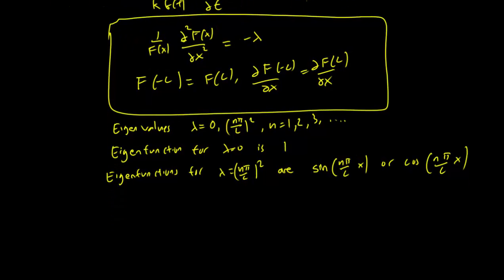And this means that our product solutions are going to be of this form. Either u_n(x,t) equals e^(-k(nπ/L)²t) cosine(nπx/L)